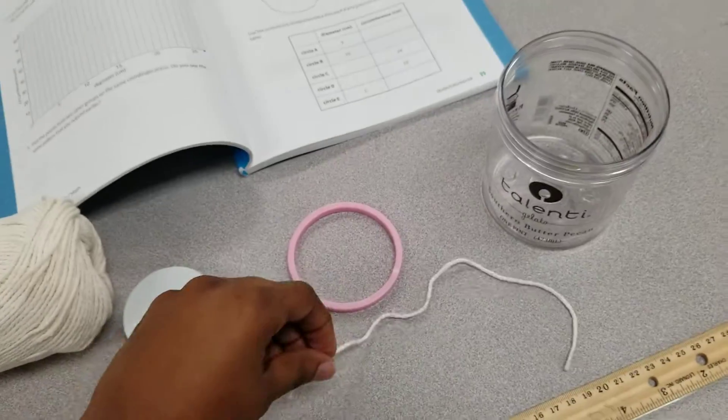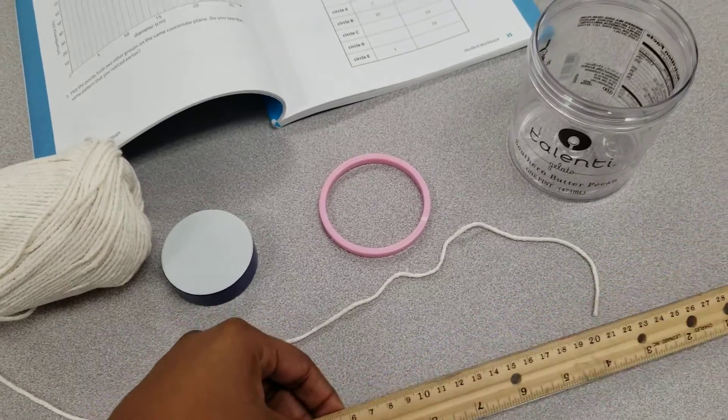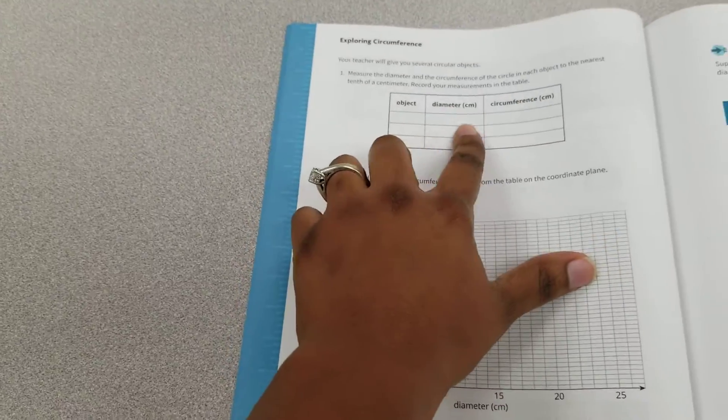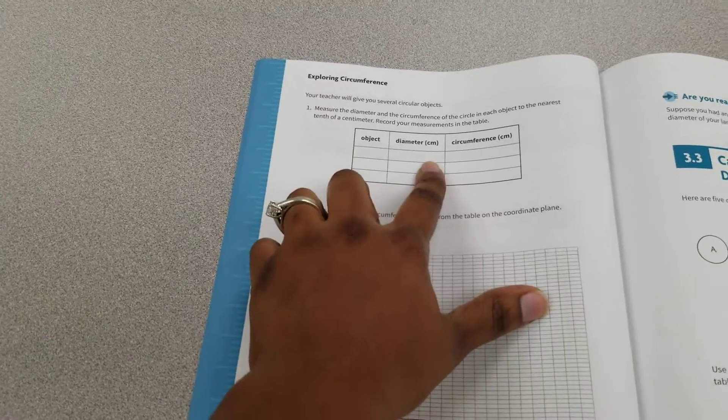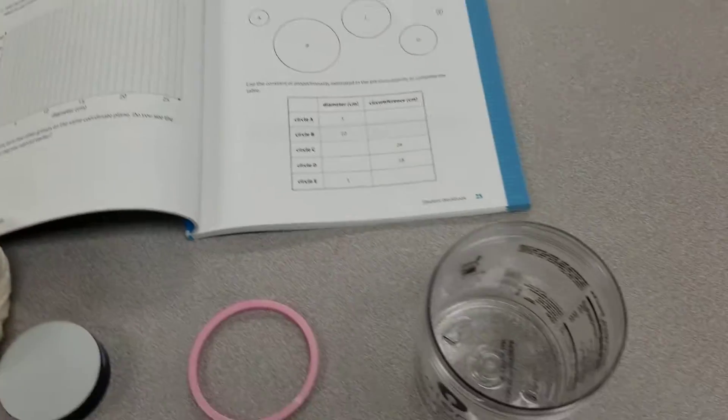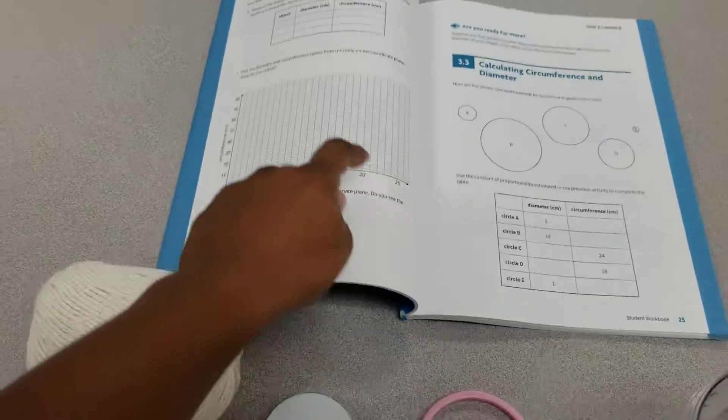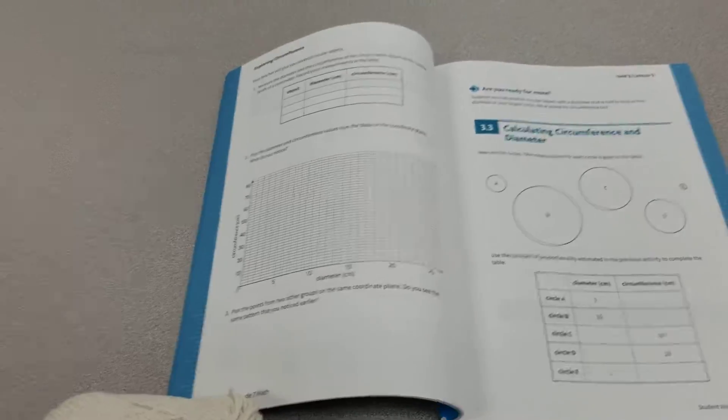Once I have my circumference and my diameter of my object, I'm going to write it into the page of my book and I'll follow the same process for all three objects and then I'll graph it here.